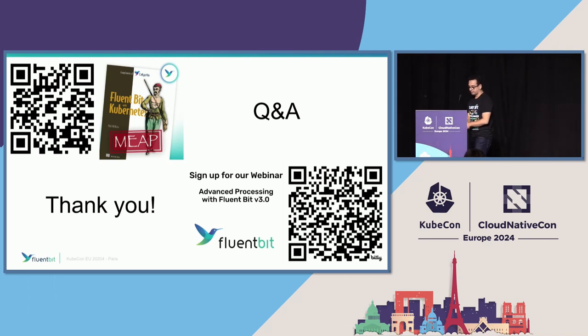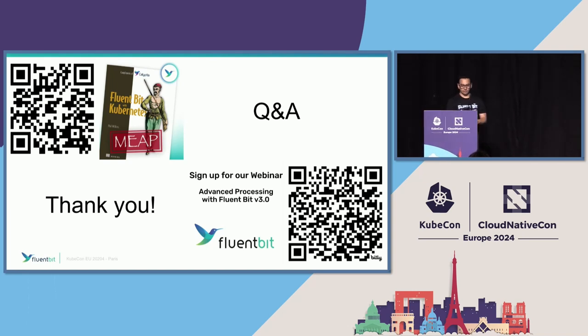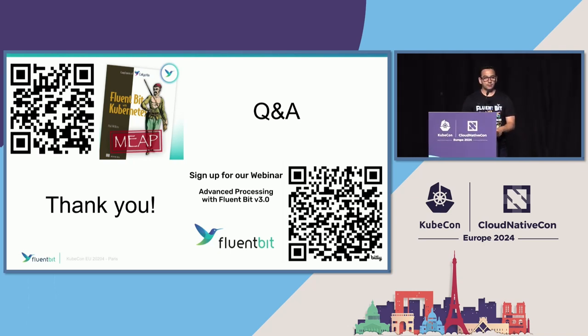Q: Do you support your own logs as JSON? Internally in FluentBit we don't use JSON — we use MessagePack, which is a binary version of JSON. If we can ship our own logs as JSON — not at the moment. Most people don't need it, but if you're interested, please open a GitHub issue and we'll be happy to support it.